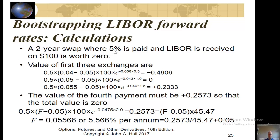We have a two-year swap where 5% is paid and LIBOR is received on $100 million, and it's initially worth zero. So we need to sum up a total of four payments — a two-year swap with a payment every six months — and the sum of the present values of all those payments has to equal zero.